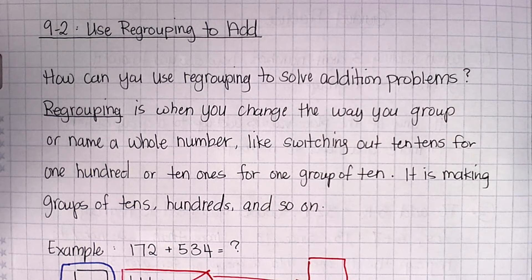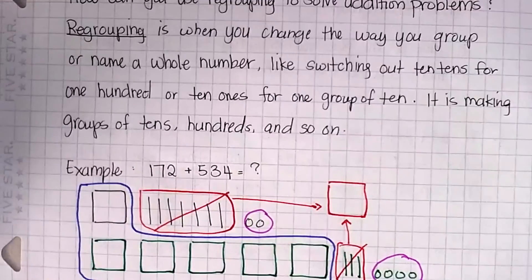Well, first we need to understand what regrouping is. So regrouping is when you change the way that you group or name a whole number, like switching out 10 tens for 100 or 10 ones for a group of 10. It's making groups of 10s and so on.